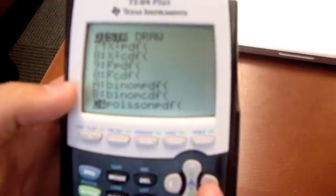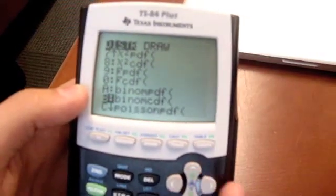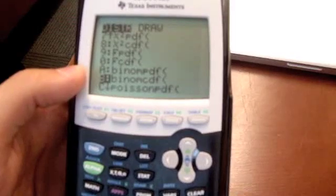Now you have a choice between the binom PDF and the binom CDF. For this experiment, we're going to choose the binom CDF, the one that gets the cumulative distribution.